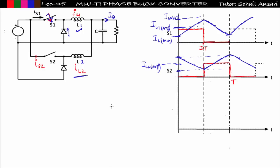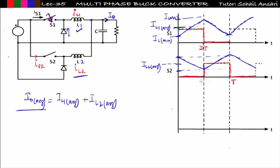Now I want to draw the load current i0. In the earlier case with one buck converter, the average load current equals the average inductor current. But here, two buck converters are connected, so the load current does not equal only one inductor current. Applying KCL: i0_avg = iL1_avg + iL2_avg, because the average capacitor current is zero. From this, we can conclude that the overall average load current increases when we add both inductor currents.